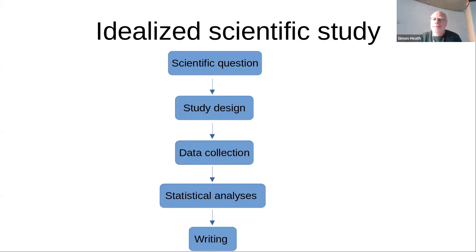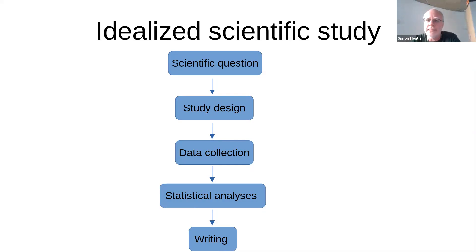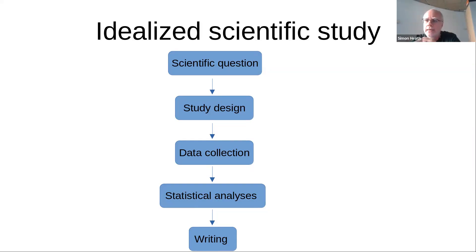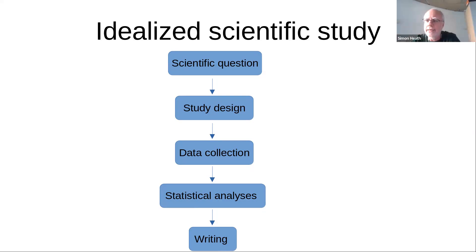Let's start with the idealized way we think people do science: you have a scientific question, a hypothesis — perhaps that factor A controls a particular disease, or that genetic factors varying in your population affect a disease. You design a study, collect samples and biological material, generate data, do statistical analysis, write papers, and achieve success, which allows you to repeat the cycle and get more funding for more studies.